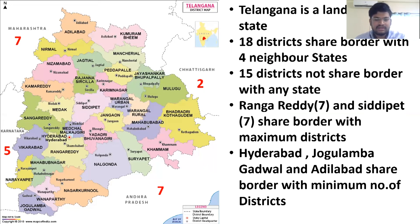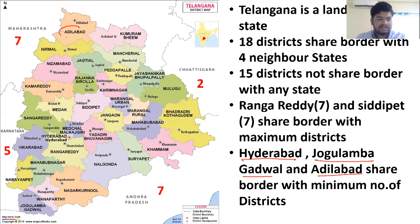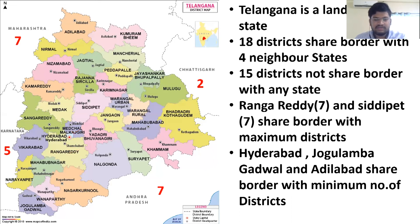Hyderabad, Jogulamba Gadwal, and Adilabad share border with the minimum number of districts — only two each. Adilabad shares border with Nirmal and Kumaram Bheem Asifabad. Hyderabad shares border with Medchal Malkajgiri and Rangareddy. Jogulamba Gadwal shares border with Wanaparthy and Narayanpet.